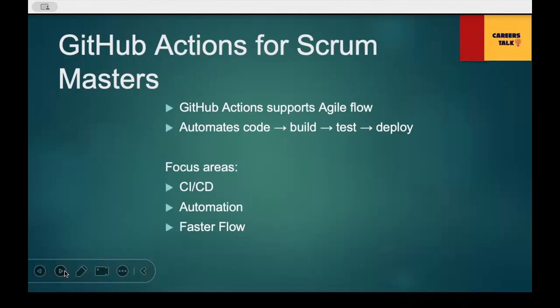We are basically focusing on three things. First, CI/CD — how GitHub Actions automates builds, tests, and deploys. Second, automation — how repetitive manual work is removed from the team's sprint. Third, faster flow — how this leads to quicker feedback, fewer blockers, and smoother sprint progress. Throughout this video, I will break down each of these areas in a simple Scrum Master-friendly way and show you how understanding GitHub Actions helps guide your team better.